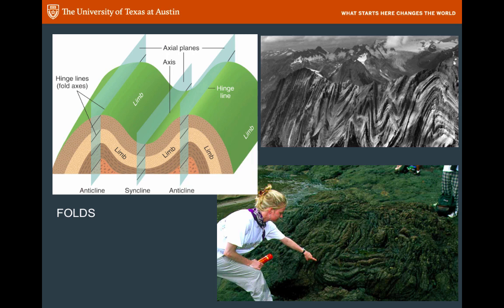If you look at the different layers here, you can see the hinge line defined on the green layer, then on the brown dotted layer, then on the brown dashed layer, and on the orange layer underneath that. Each one of those hinge lines can be linked together into one plane, and we call that the axial plane. So those are very useful things to define — we can measure the strike and dip of an axial plane.